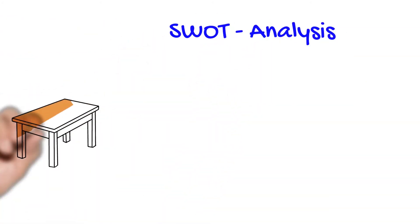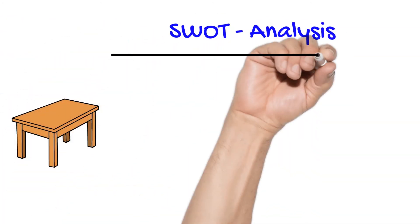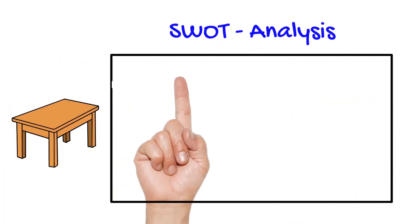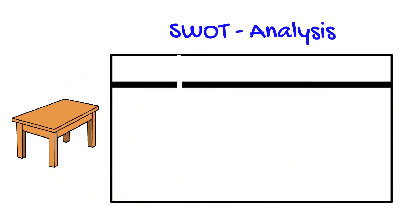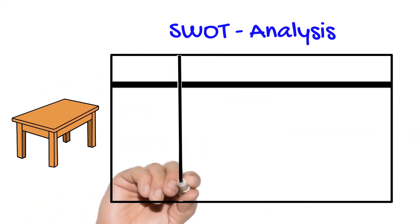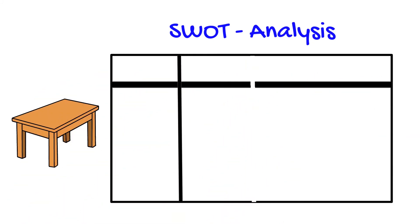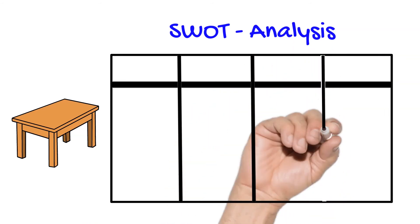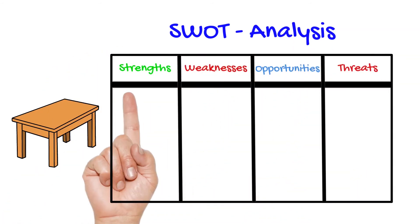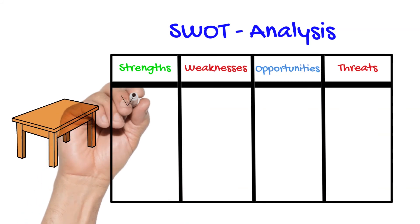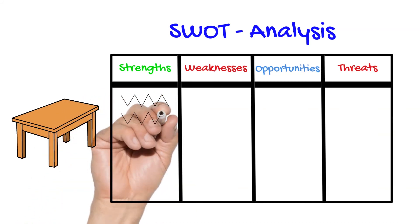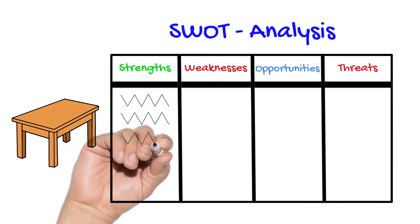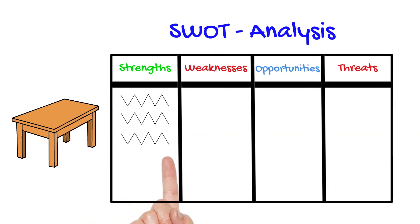Lastly, a SWOT analysis is very similar to a PMI analysis, except the criteria used in this acronym are strengths, weaknesses, opportunities, and threats. In the strengths column you would identify all the strong points of your design, and in the weaknesses column you would identify the lesser parts.